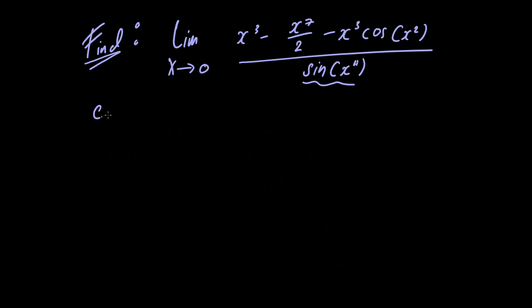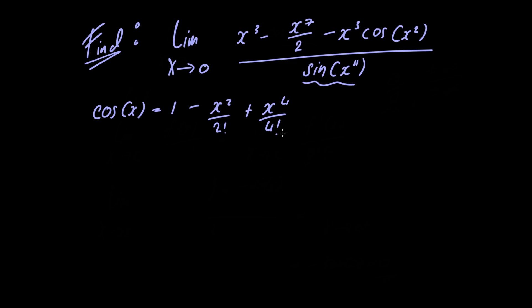We can write cosine of x as 1 minus x squared divided by 2 factorial, plus x to the 4th power divided by 4 factorial, plus O of x to the 6th power. This notation means that all of the remaining terms have powers of x that are at least 6.